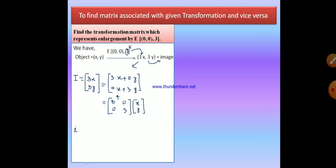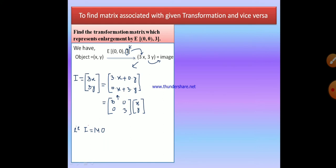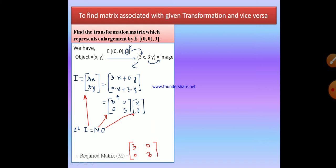Now we compare with the formula I equals to MO. Our image is 3X comma 3Y, our matrix is 3, 0, 0, 3, and our object is X comma Y. After this comparison, the required transformation matrix M is 3, 0, 0, 3.